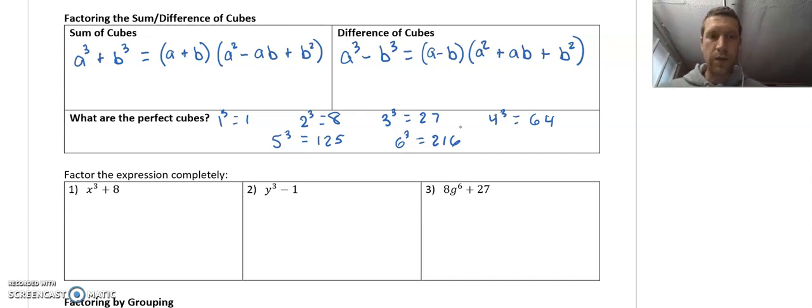So if you have two terms and they're both perfect cubes, and there's either an addition or a subtraction sign, this is the method that you're going to use.